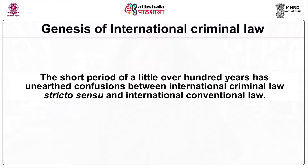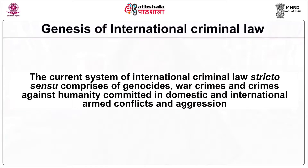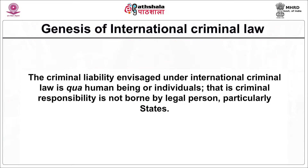The short period of a little over 100 years has unearthed confusions between international criminal law stricto sensu and international conventional law. The current system of international criminal law comprises genocide, war crimes, crimes against humanity committed in domestic and international armed conflicts, aggression, and terrorism.